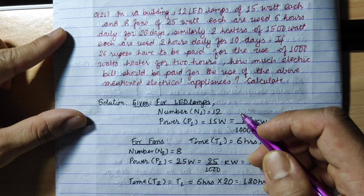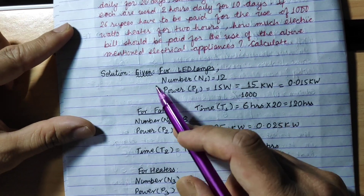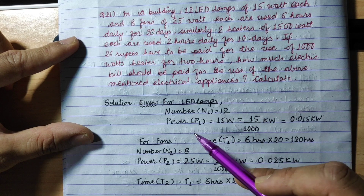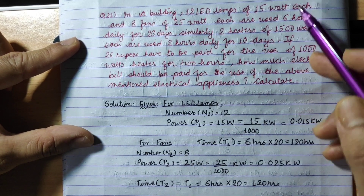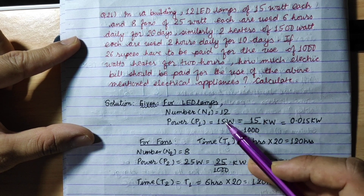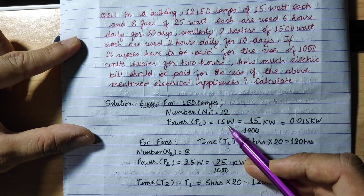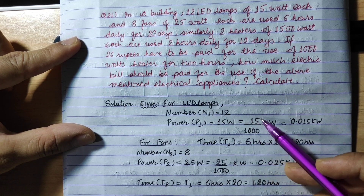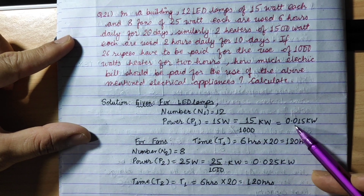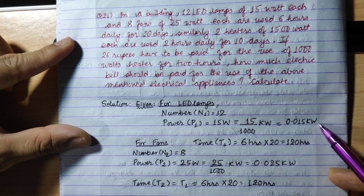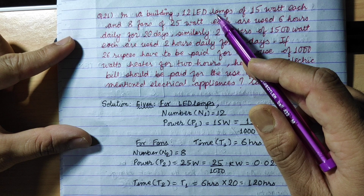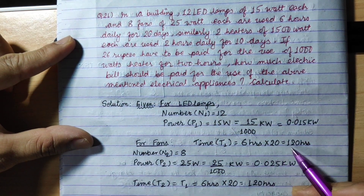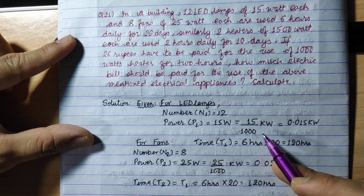Let's write the given data. For LED lamps: n1 = 12. Power P1 = 15 watts. We need to convert to kilowatts, so P1 = 0.015 kW. Time t1 = 6 hours × 20 days = 120 hours.